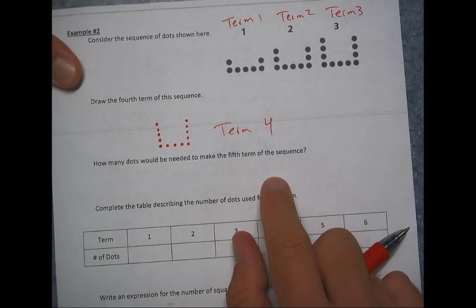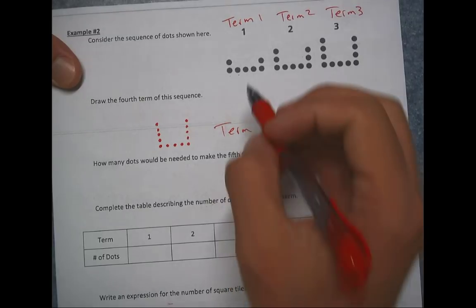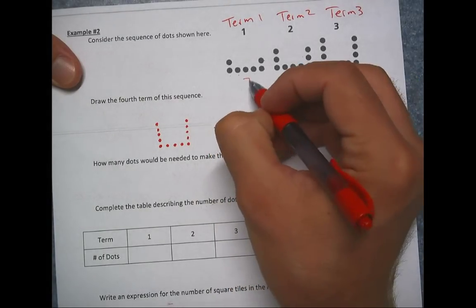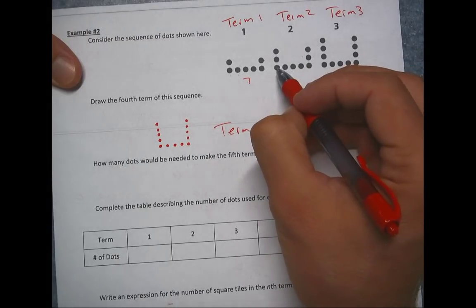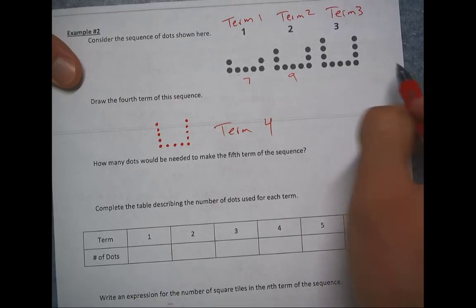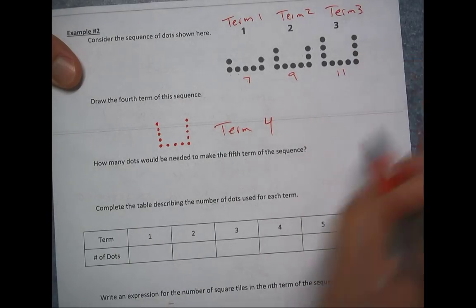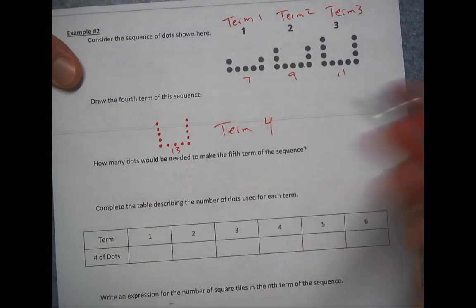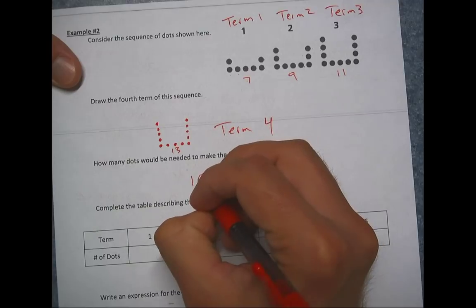How many dots for the fifth term of the sequence? Well, if you take a look, if we count, we have one, two, three, four, five, six, seven dots here. One, two, three, four, five, six, seven, eight, nine dots. We've added two more. One, two, three, four, five, six, seven, eight, nine, 10, 11 dots. And if I counted this one, there'd be 13 dots. So how many dots in the next term? You can see it's 15.